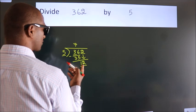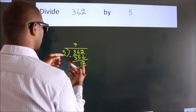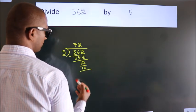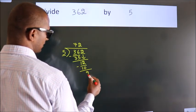A number close to 12 in the 5 table is 5 times 2 equals 10. Now we subtract. We get 2.